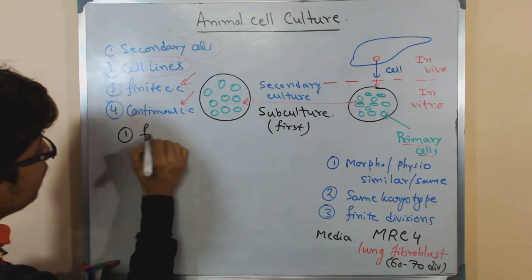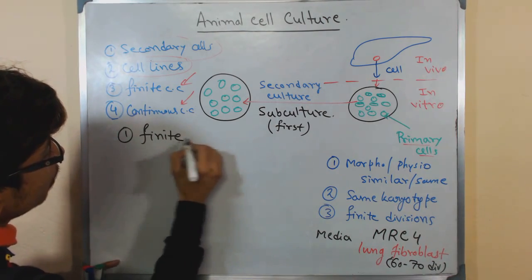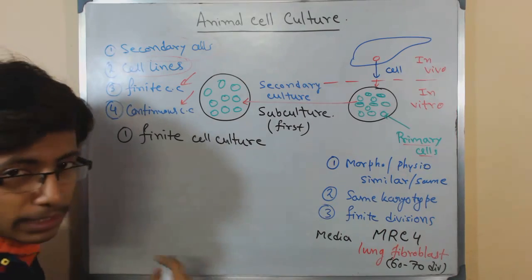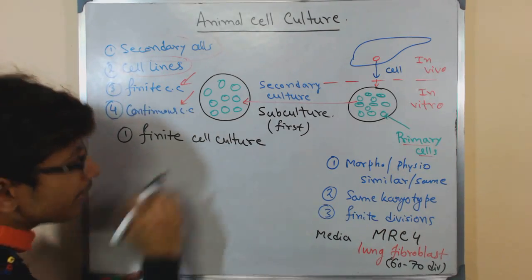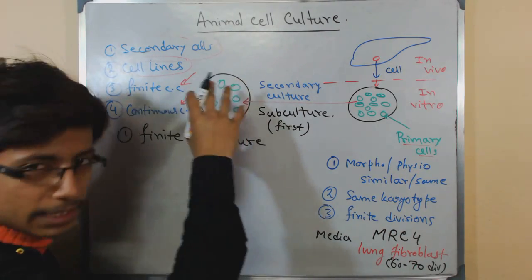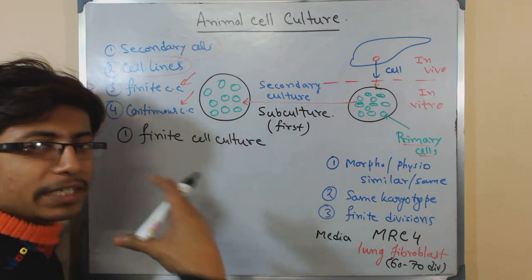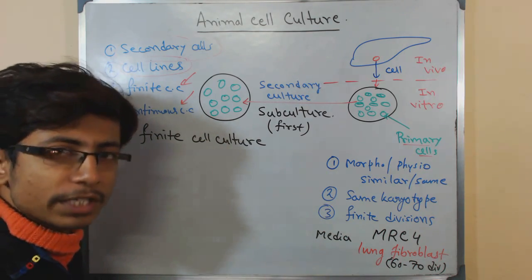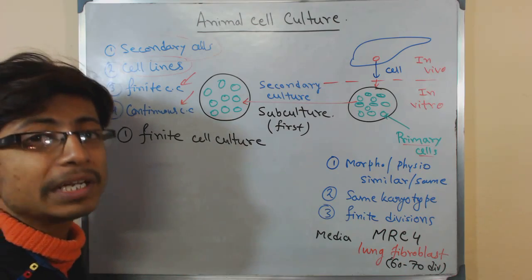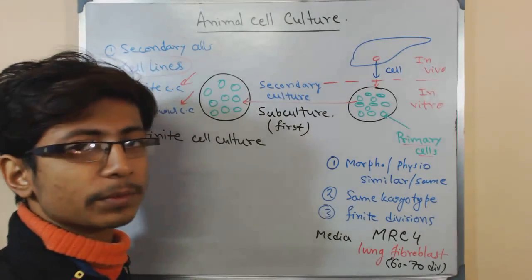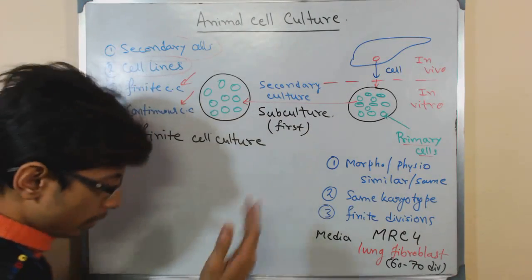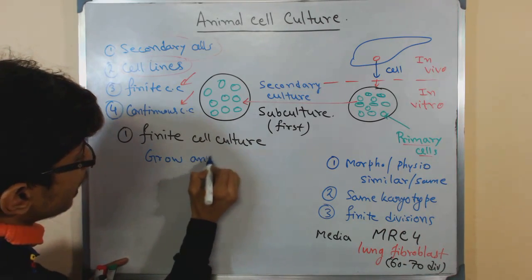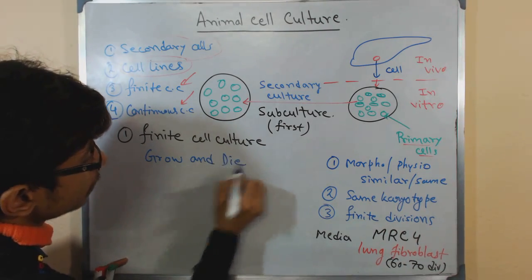If you look at finite cell culture — a type of secondary cell culture — finite cell lines means those cells will divide and grow up to a particular number of generations and then ultimately die, just like primary cells. So they grow and eventually die.